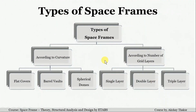After that, we see the different types of space frames — according to curvature and according to number of grid layers. According to curvature, they are divided into flat covers, barrel vaults, and spherical domes. According to the number of grid layers, they are divided as single layer, double layer, and triple layer space frames.